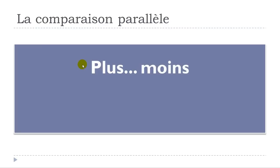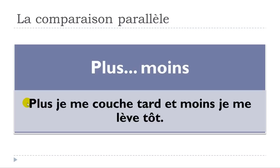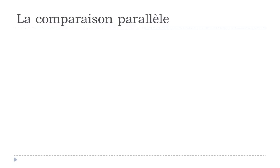For PLUS ET MOINS — note that in this case you don't put a virgule but you put ET: PLUS JE ME COUCHE TARD ET MOINS JE ME LÈVE TÔT — the more I go to bed late, the less I wake up early. Coucher is to go to bed, tard is late, se lever is to wake up, tôt is early.